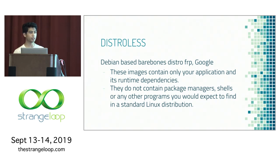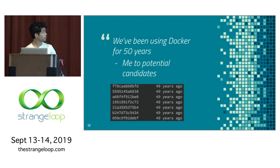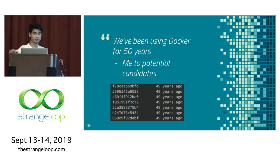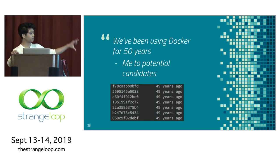Distroless has images for other languages too — I think they have one for Python and Java. One nifty side effect: when you reset the mtimes in the filesystem and then run docker images, it prints out all your images and says they were built 49 years ago.